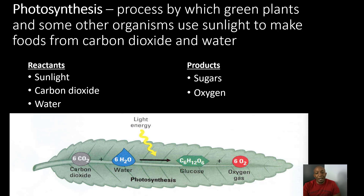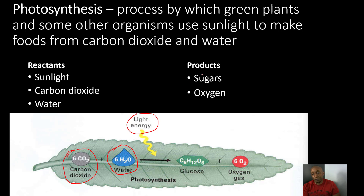Let's take a look at our basic diagram of photosynthesis. First, we have that sunlight energy going in, then we have our carbon dioxide, which comes from the atmosphere and from the air that we breathe out, and then we have our water. All three of these reactants are used in photosynthesis to produce our products, which are sugars in the form of glucose, and oxygen gas as a by-product, which is what we breathe in to help us survive.